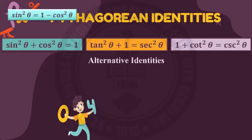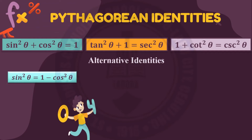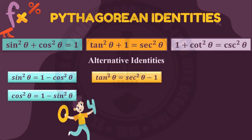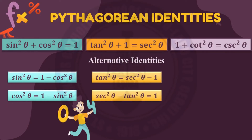And here are their alternatives. Sine squared theta equals one minus cosine squared theta. Next, cosine squared theta equals one minus sine squared theta. This first pair of alternative identities corresponds to sine squared theta plus cosine squared theta equals one. Next, tangent squared theta equals secant squared theta minus one, and secant squared theta minus tangent squared theta equals one. This pair is the alternative identity of tangent squared theta plus one equals secant squared theta.